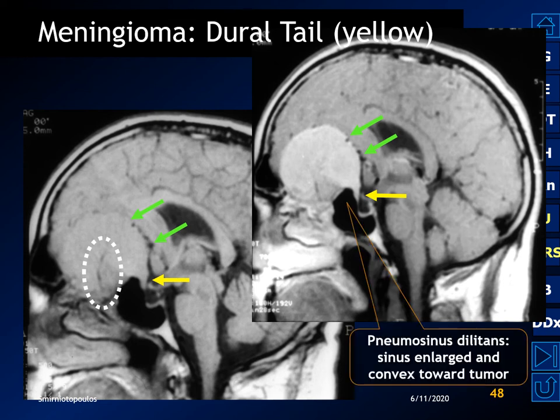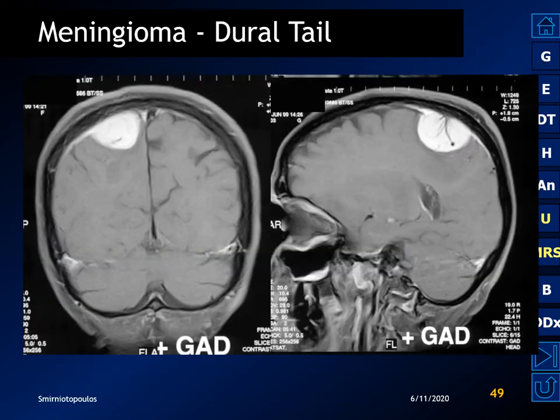Another curious feature observed in meningiomas is called pneumosinus dilatans — an almost paradoxical enlargement of the air-filled sinus convex towards the tumor. Here is another example of a dural tail: this curvilinear thickening coming away from the edge of the hemispheric mass, also demonstrating prominent flow voids within the tumor.